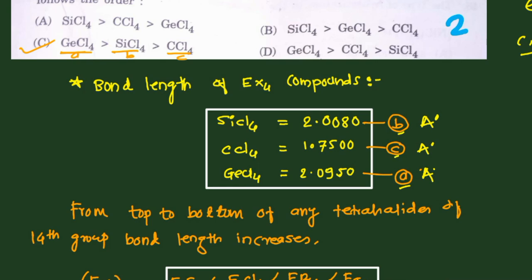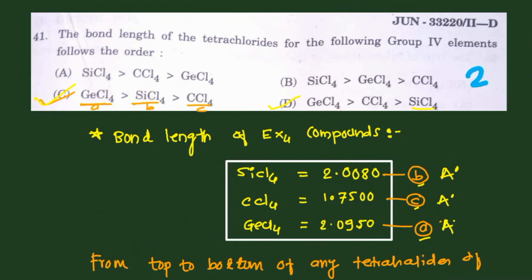Since the highest is GeCl4, the correct option is either C or D. The second value is 2.0083 Å and the third matches, so the correct answer is option C. This is a straightforward question applying atomic properties — particularly size trends — to Group 14 tetrachloride bond lengths. The correct answer for Question 41 is C.